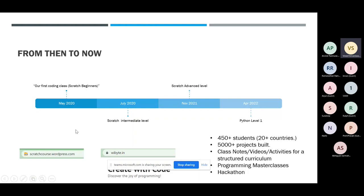Rest is history. We have made decent progress — obviously a long way to go, still work in progress. We started with beginners in Scratch, then moved to Scratch intermediate level, and last year we started an advanced level in Scratch. Now we have a full 36-week structured program where students go through a very structured curriculum, build projects, and so on. In April of this year, we also introduced a Python course. We have had 450-plus students from 20-odd countries, and together we have built more than 5,000 projects.